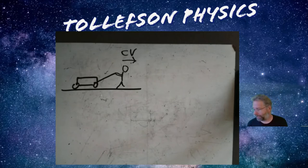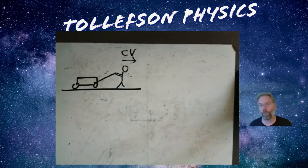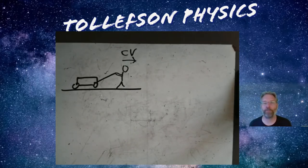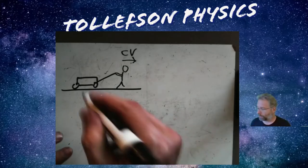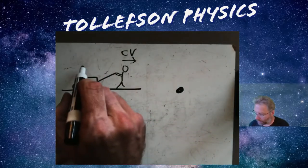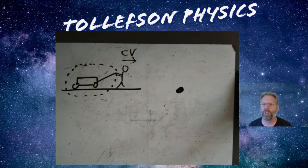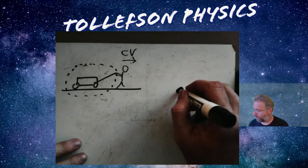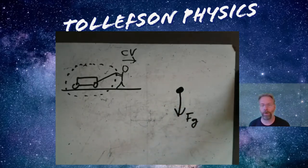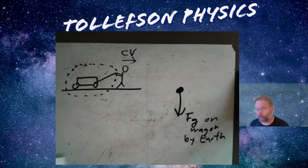My first situation is a wagon - I'm going to pull this wagon at a constant velocity towards the right and draw a force diagram based upon that. The forces are the same types we were looking at before, but now they don't have to be perpendicular to each other. I'll draw the center of mass and look at what the wagon is touching - it's touching the ground and the person's hands. We're on planet Earth, so we always have a force due to gravity on the wagon by the Earth.